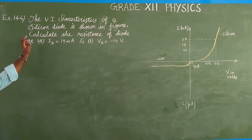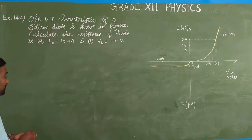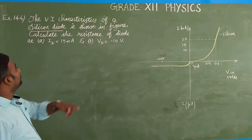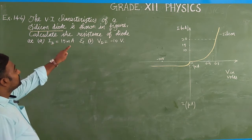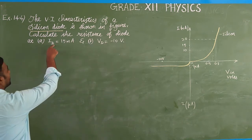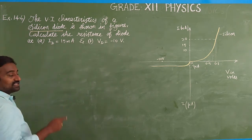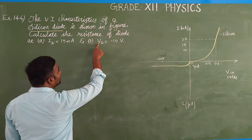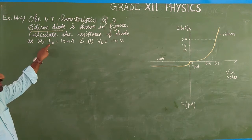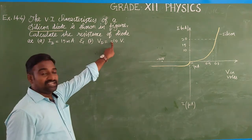Look at the question. The VA characteristics of a silicon diode is shown in the graph. You are going to calculate the resistance of the diode in two cases. One is when the diode current is 15 milliampere, what is the resistance? Similarly, when the diode voltage is minus 10 volts, what is the resistance? So the diode current is in forward bias and the diode voltage is in reverse bias.